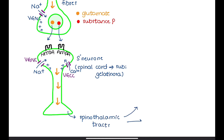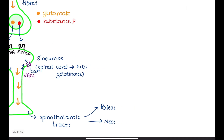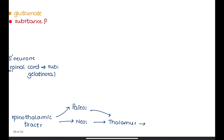The spinothalamic tract takes two pathways to the brain: through the paleospinothalamic tract and the neospinothalamic tract. These neurons synapse with tertiary neurons in the thalamus and then travel to the somatosensory cortex. This is how the brain perceives pain.